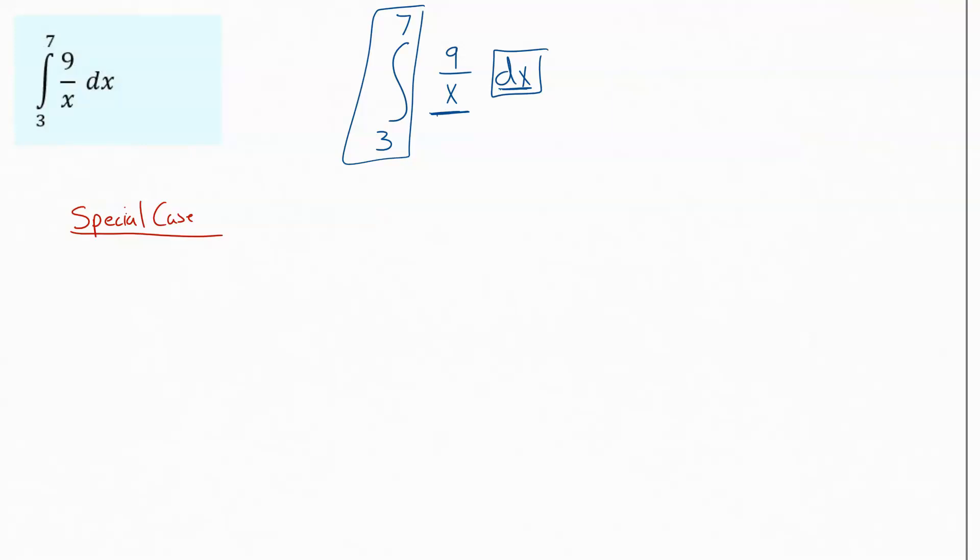What we're looking at here is a special case when you have a number, any number, over x to the first power. This only works when you have a number over x to the first power. This came from the natural log, so this is going to be whatever that number is on top times the natural log of the absolute value of x plus C. The key is it's the absolute value of x. Some teachers will let you get away without putting that absolute value, but technically it's there. Unless told otherwise, I would keep it as part of the answer.